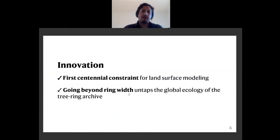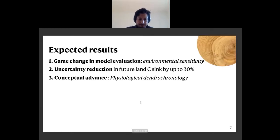This work will produce the first centennial constraint for land surface models as ice cores are for atmospheric models. And by going beyond ring width, I will untap the global ecology of the tree ring archive. I expect three main results. First, CATES will lead to a game change in model evaluation of the environmental sensitivity at the time scale of global changes.